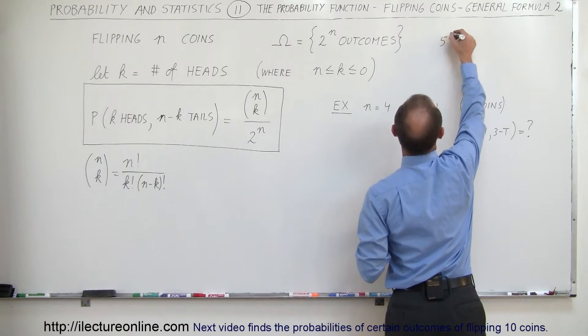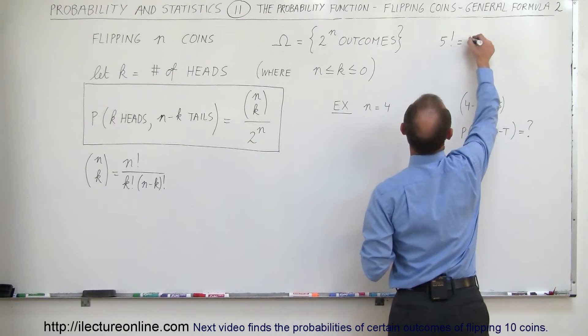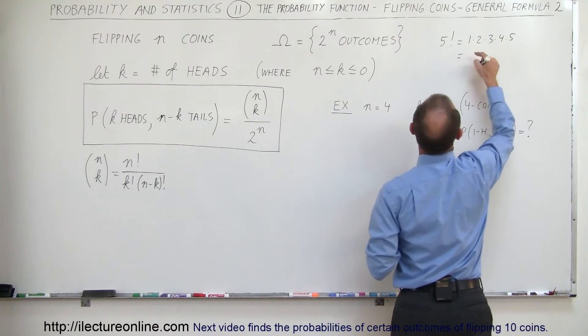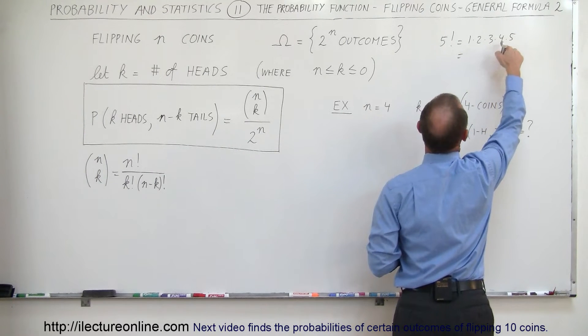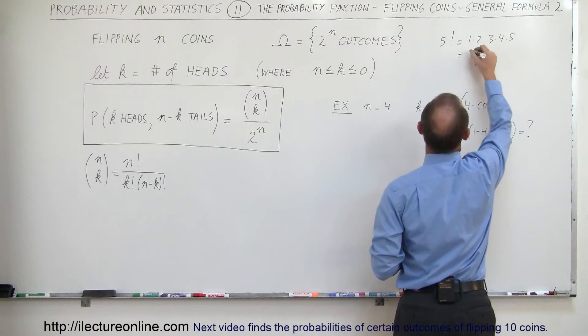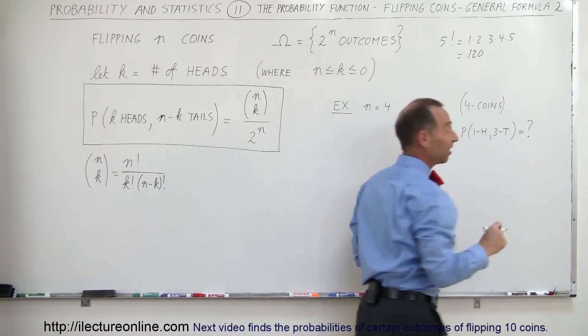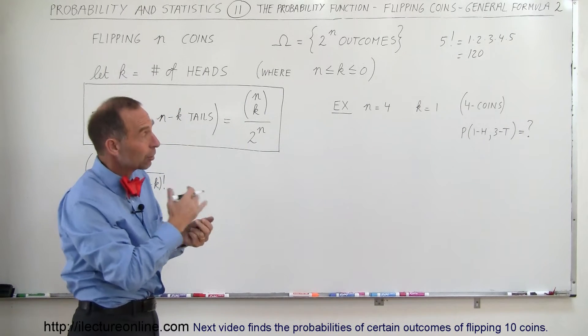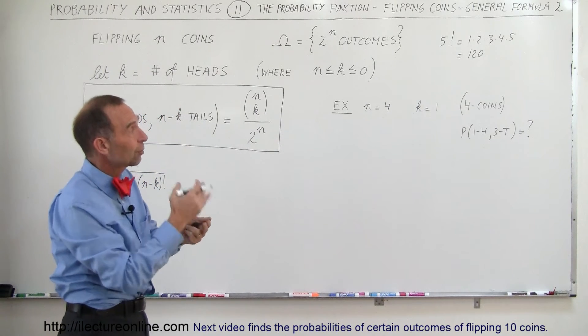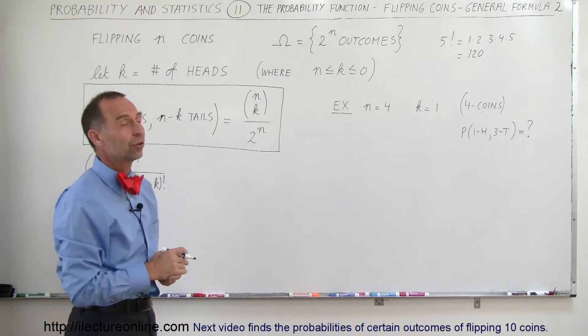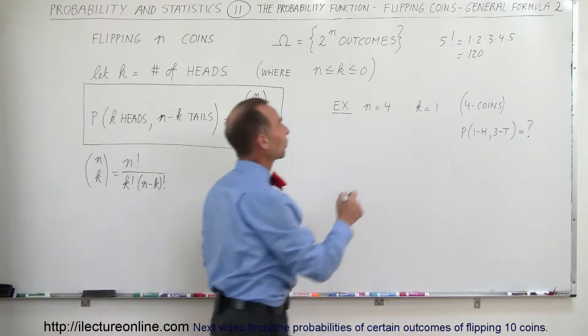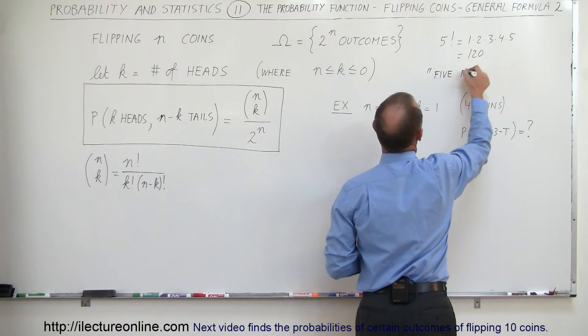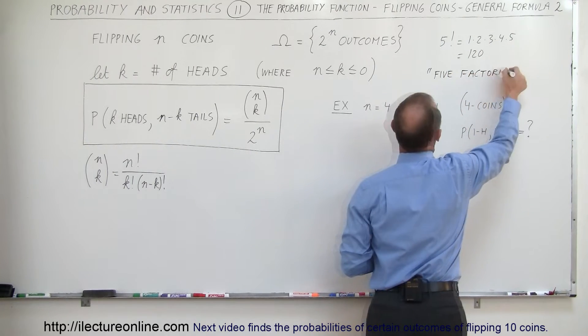So let's say 5 factorial is equal to 1 times 2 times 3 times 4 times 5. That would be equal to 2 times 3 is 6 times 4 is 24 times 5 is 120. A lot of calculators already have the factorial button on there. If not, simply multiply the numbers together. 1 times 2 times 3 times 4 times 5 is 120. That means 5 factorial.